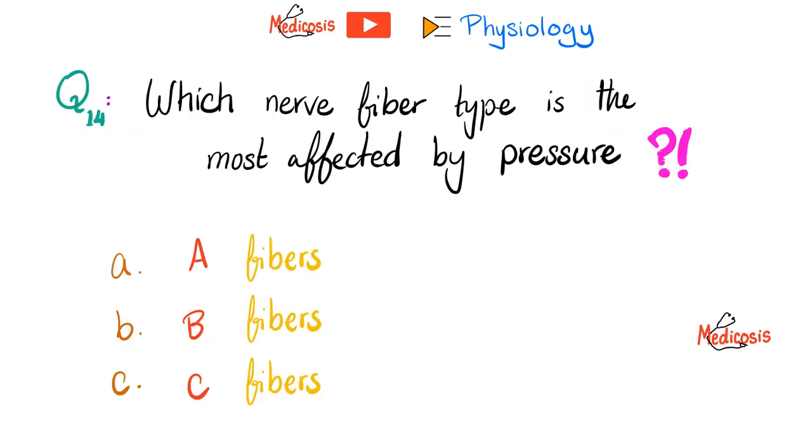Let me answer the question from the previous video. Which nerve fiber type is most affected by pressure? Type A, B, or C fibers? The answer is: what will pressure cause? It can cause pressure hypoxia. Therefore, which one is affected the most? Whoever is most metabolically active and thickest. The correct answer is A fibers.